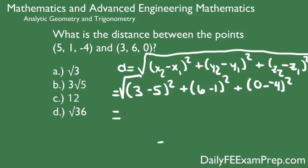So I've inputted this already. Once you input that in your calculator, it tells me that that answer is 3 times the square root of 5. And we can see that that is option B.